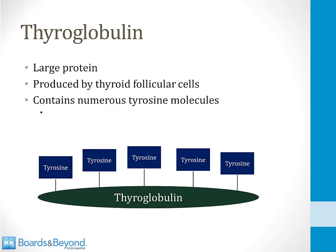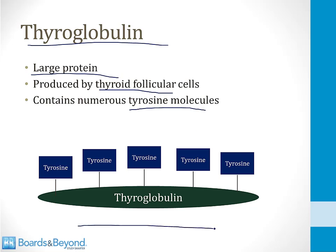To understand how T3 and T4 are synthesized, you need to understand thyroglobulin — a large protein produced by follicular cells of the thyroid gland that contains numerous tyrosine molecules. Pictured on screen, thyroglobulin has all these tyrosines sticking off of it, and the thyroid gland will convert these tyrosines into T3s and T4s, which ultimately become the thyroid hormone used by the body.